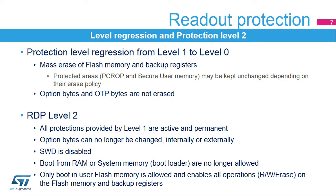It is possible to modify option bytes in Level 1, and then remove the protection by changing the protection level to Level 0. This protection level regression will cause the flash memory and the backup registers to be mass erased. Flash areas protected by PCROP or configured as secure user memory can be erased or left unchanged depending on their erase policy configuration.